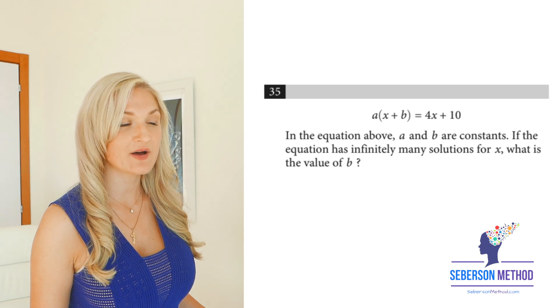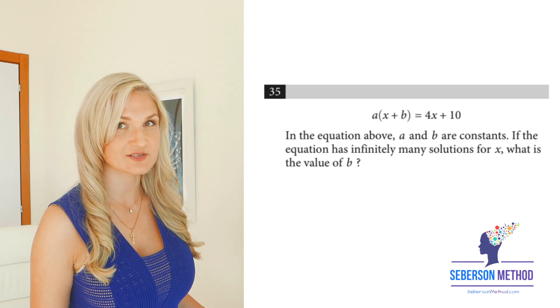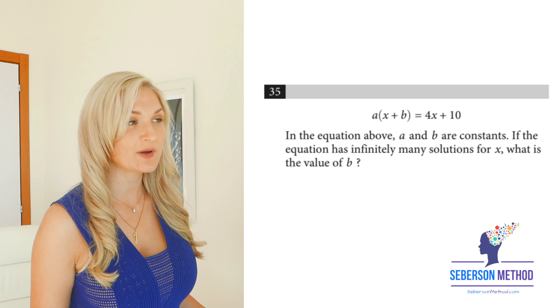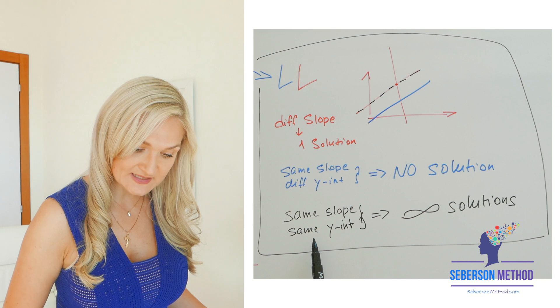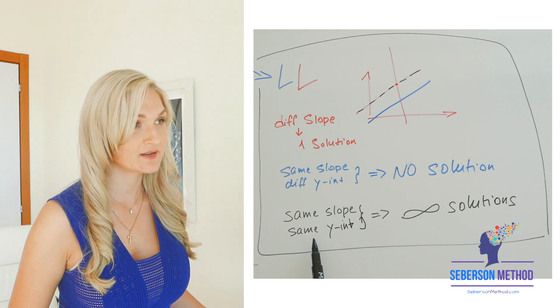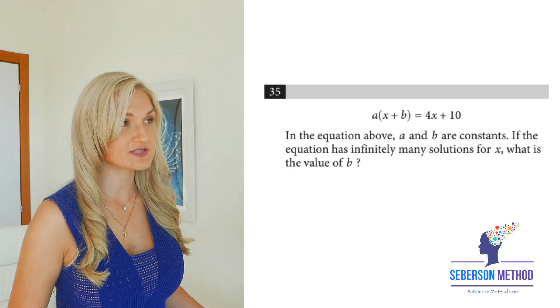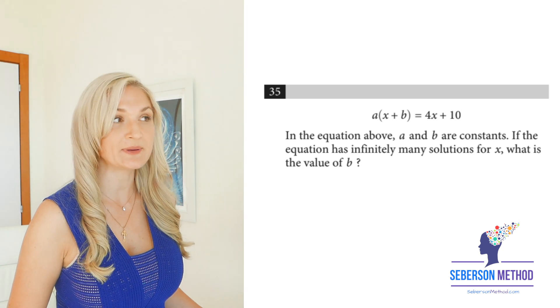In the equation above, a and b are constants. That means that they're just numbers. If the equation has infinitely many solutions, so we're over here, same slope and same y-intercept. Infinitely many solutions. What's the value of b?